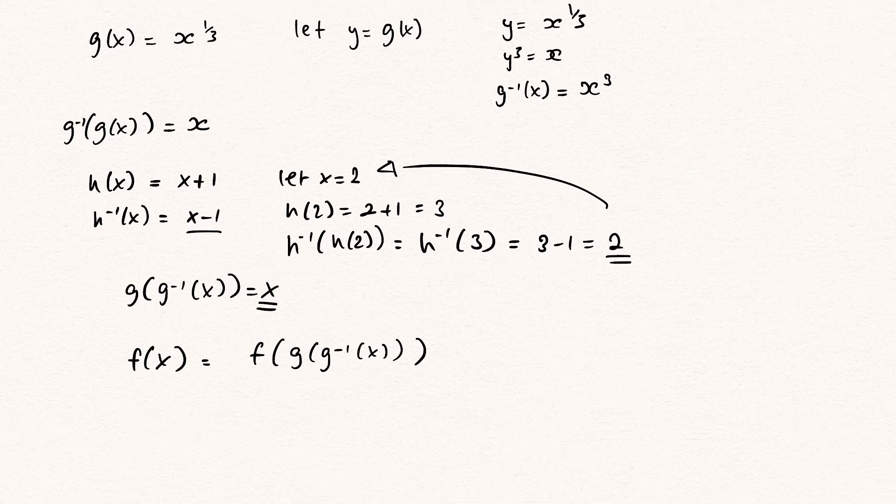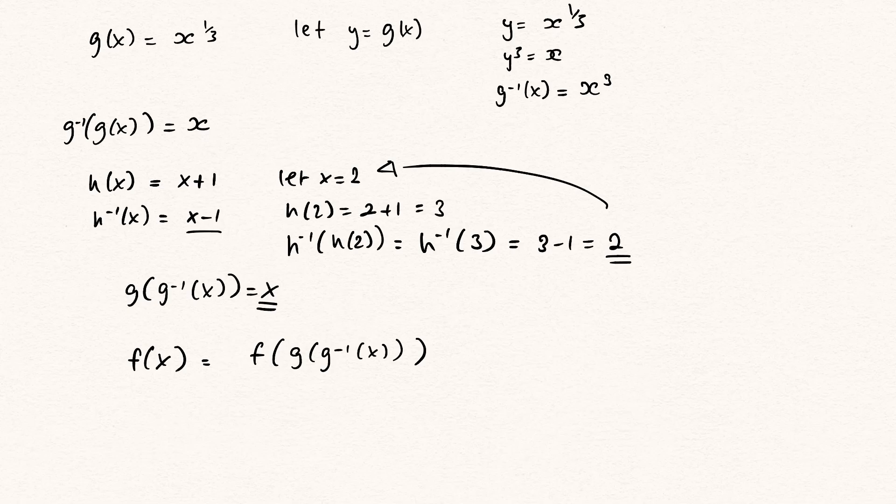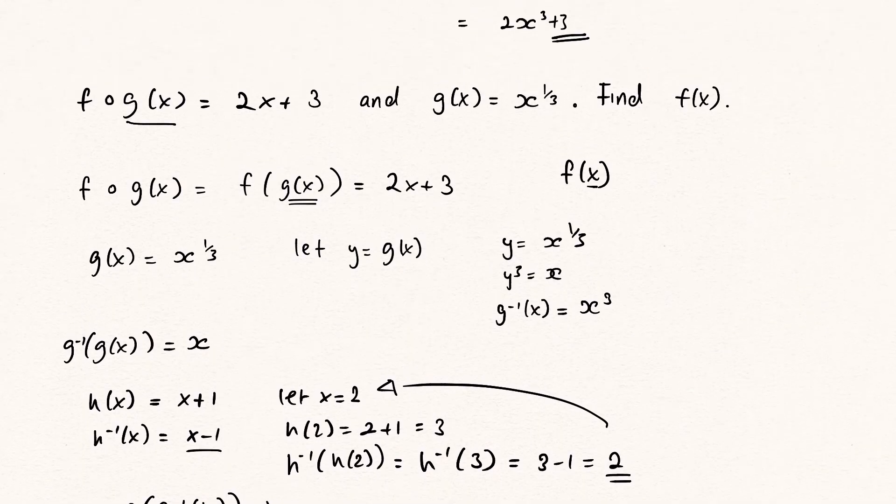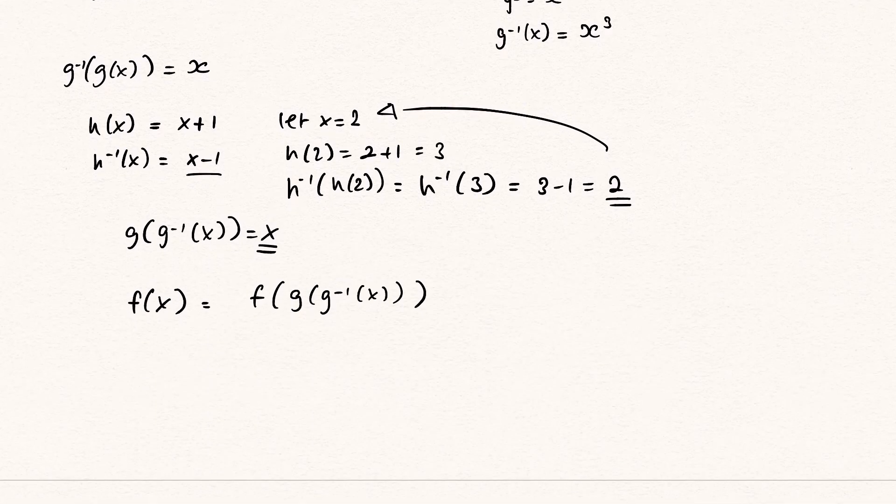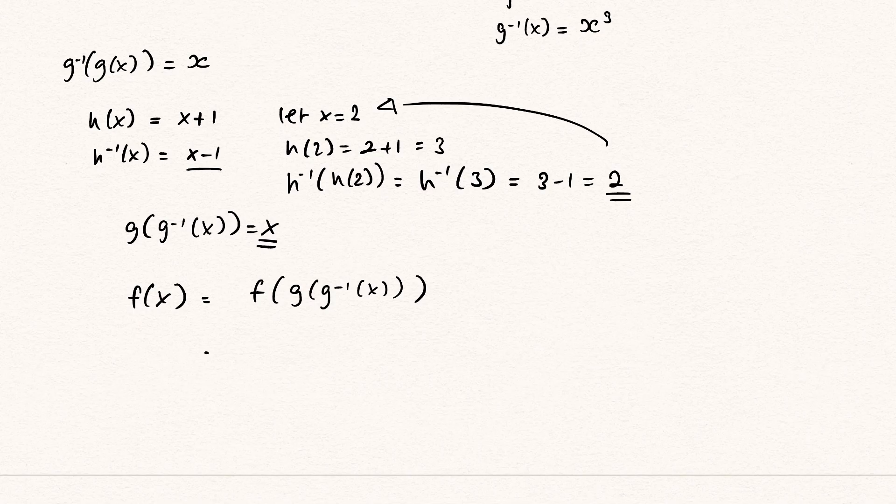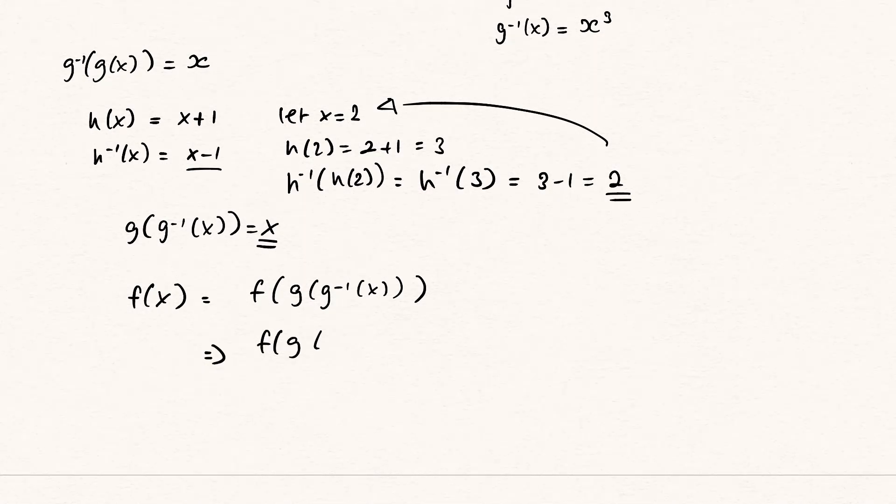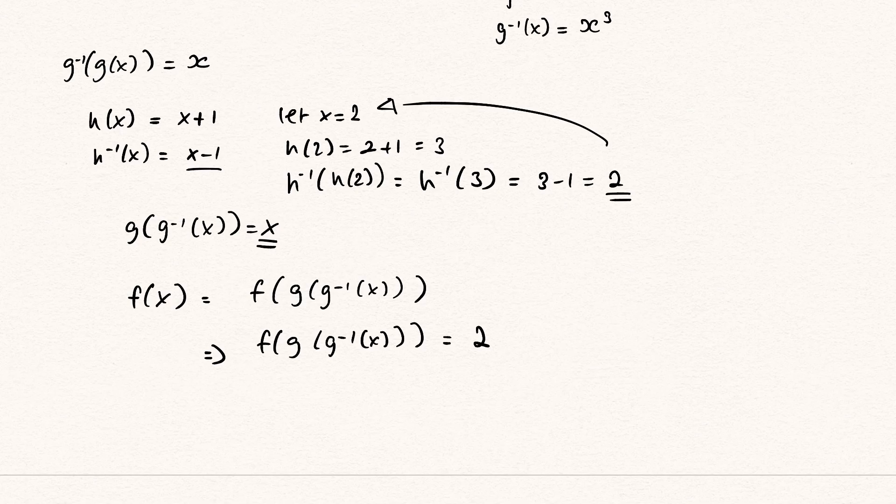And this is very good, because we know what f of g of x is. We were given that in the question, right here. It says that f of g of x is 2x plus 3. So if we use that knowledge, we have that f of g of g^(-1) of x equals 2 times g^(-1) of x plus 3.